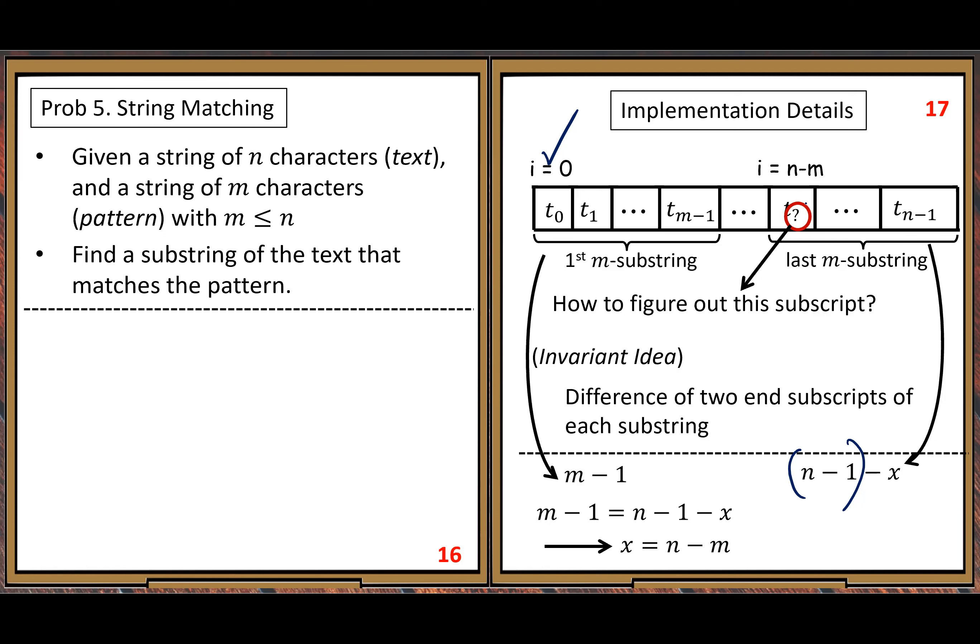So we find the last subscript index i equals n minus m. Now when you write the for loop, it's easy — from zero through n minus m. You need this number, the range for the indexes.